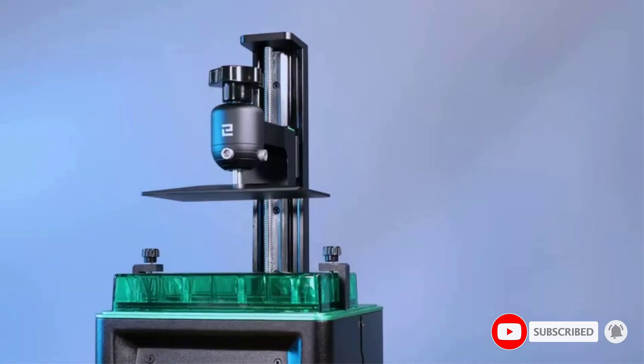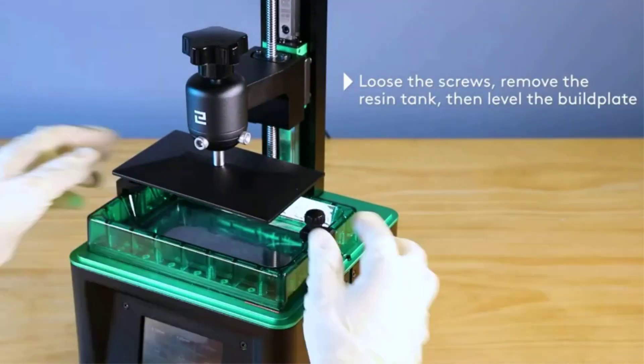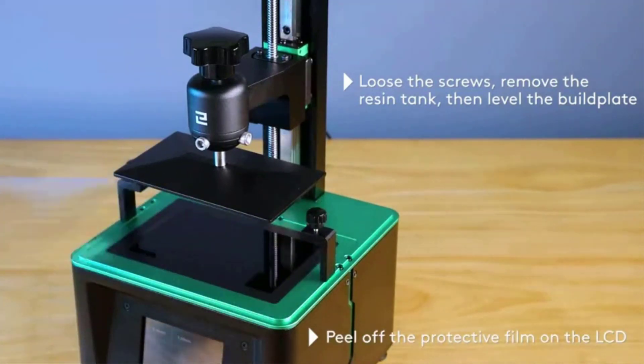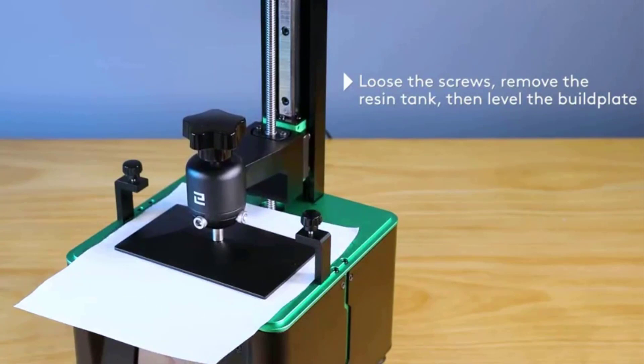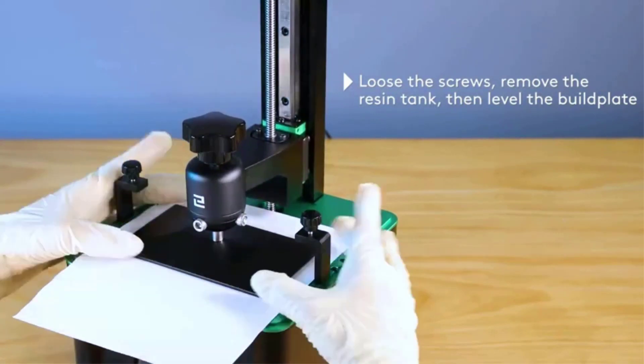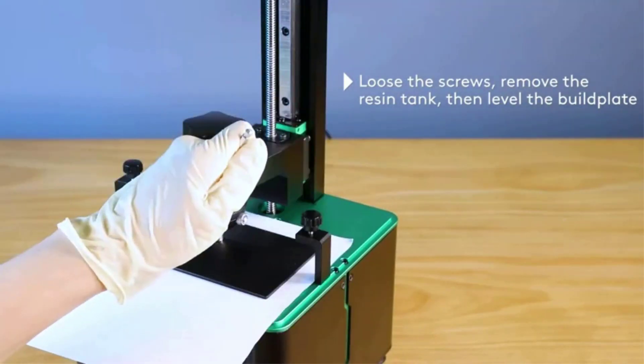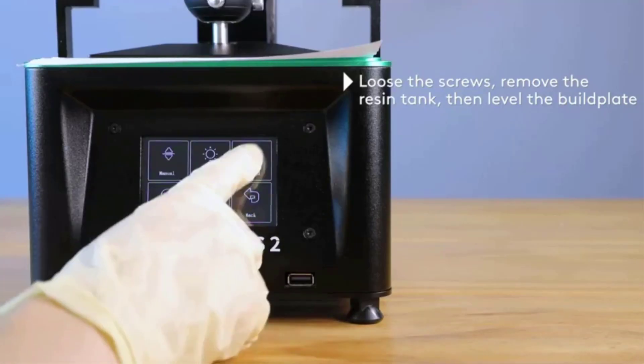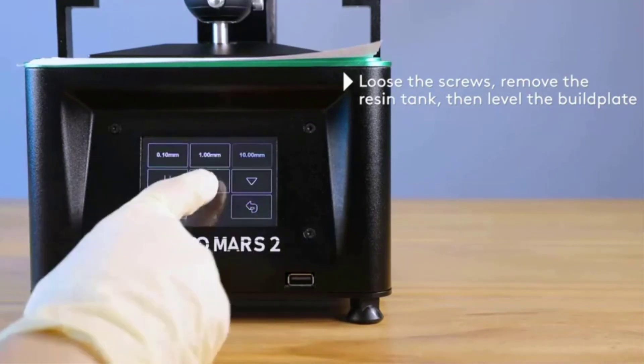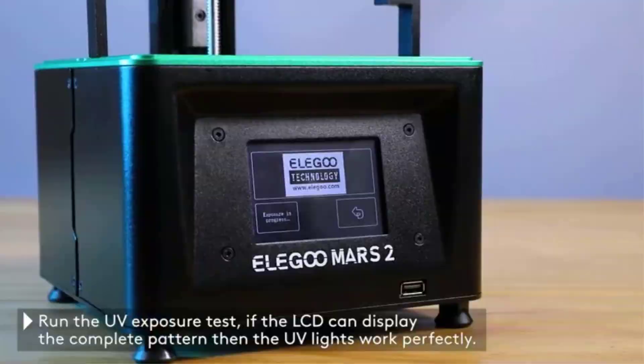Mars 2 comes with a 6.08-inch monochrome LCD of 2K HD resolution and only takes 2 seconds per layer exposure to cure resin, which could significantly enhance your printing efficiency. Mono LCD has a much longer lifespan and stable performance during long-term printing, thus saves your cost. Brand-new light source structure provides more even UV light emission and working together with 2K mono LCD, the printing details and precision are greatly improved and the 3D printed models are fascinating.